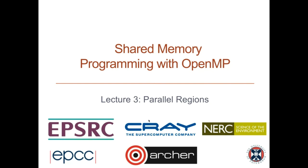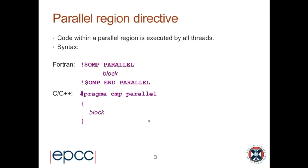Welcome back to week two of this introduction to OpenMP. For the first session this afternoon, I'm going to be looking at parallel regions. Remember from last time, the parallel region is the basic parallel construct in OpenMP — it's the only way that we get multiple threads executing. Whenever we want to do anything interesting in parallel in OpenMP, we always need a parallel region to create the multiple threads that can execute in parallel.